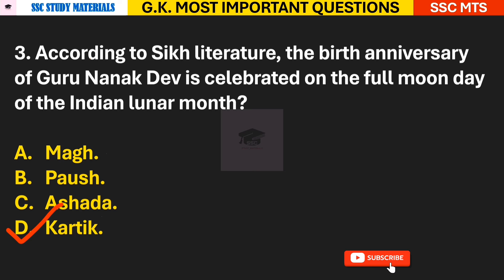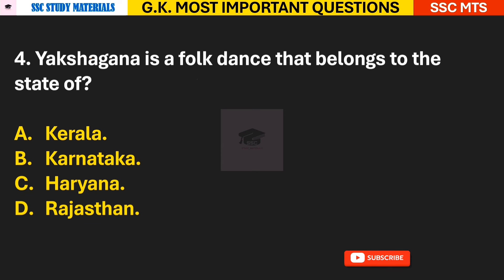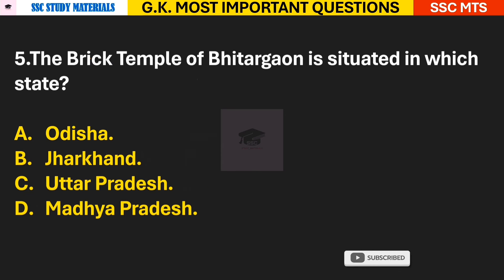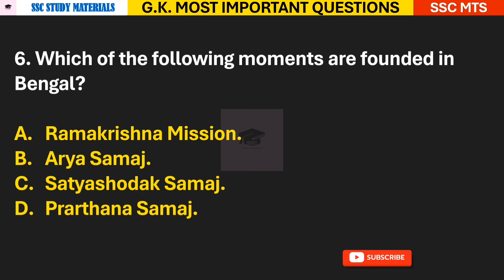Answer to Q3: D — it is celebrated in the month of Kartik. Question 4: Yaksha Gana is a folk dance that belongs to which state? Answer B — it belongs to the state of Karnataka. Question 5: The brick temple of Bhitar Gaon is situated in which state? Answer C — it is situated in Uttar Pradesh. Question 6: Which of the following movements was founded in Bengal?